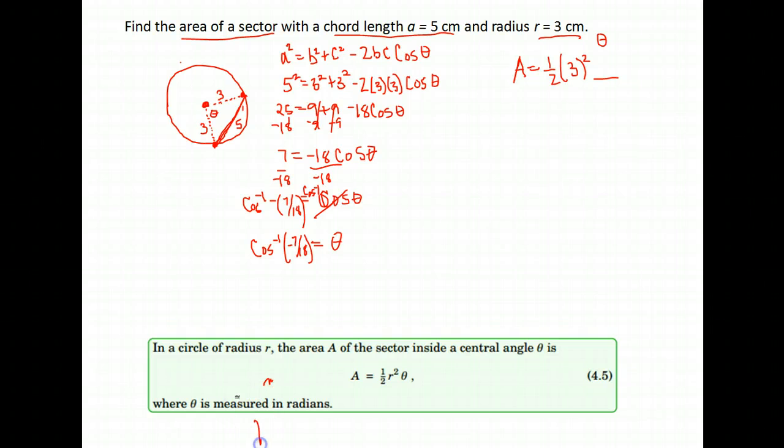And then we can go over there, and put that over here in our formula, and we can calculate what they wanted, which was the area of the sector of that circle. So, it's one-half times nine times 1.97. Which gives me about 8.87, and that would be in centimeters squared.